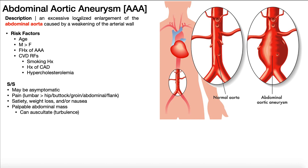When you get that weakening, it makes it likely to have this abdominal aortic aneurysm — it's just this localized enlargement. It hasn't burst; it's just ballooned up. That's what we're talking about.